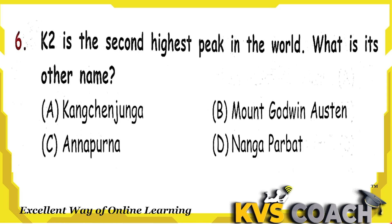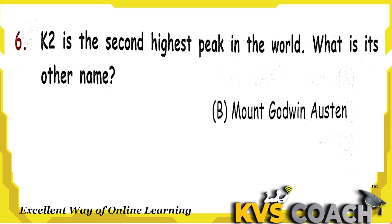Next question: K2 is the second highest peak in the world. What is its other name? Option A, Kanchanjanga — this is the third highest mountain. Option B, Mount Godwin Austin — yes, this is the second highest peak in the world. Option C, Annapurna — this is the 10th highest mountain. Option D, Nanga Parvat — this is the 9th highest mountain. So the right answer is option B, Mount Godwin Austin.